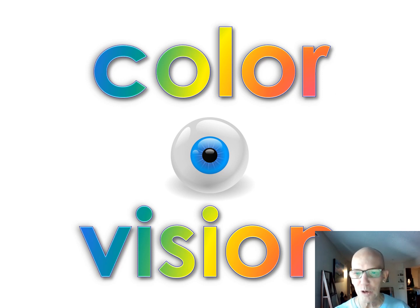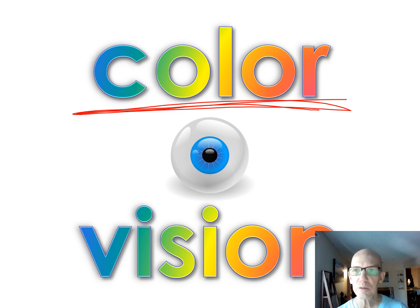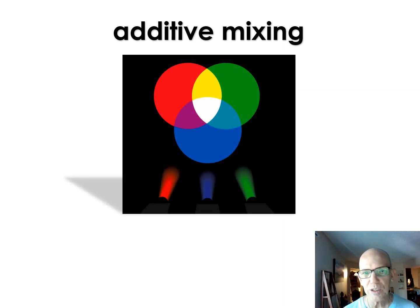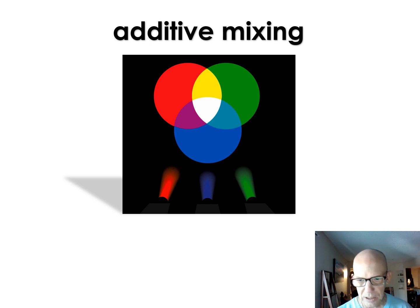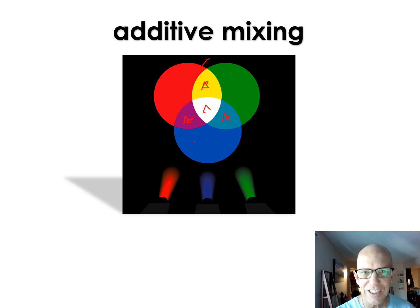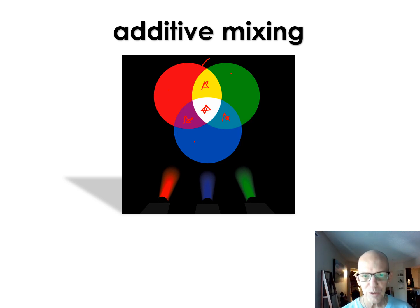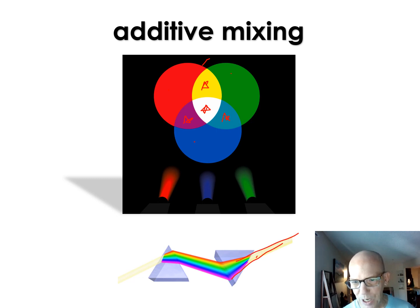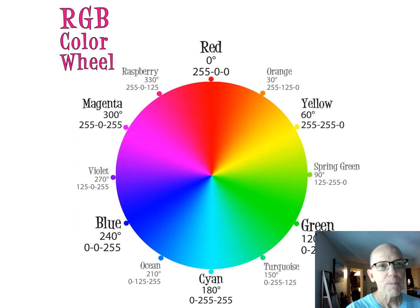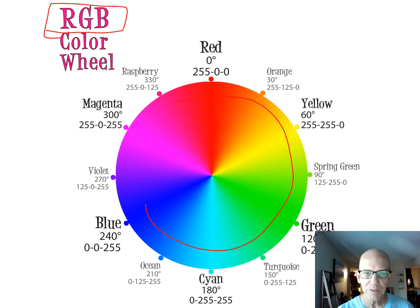The last section on vision — and the one most people want to know about — is color vision. How do we see in color? That's all about the cones, not the rods. Color vision from light is different from mixing paint. Mixing blue light and green light gives turquoise; blue plus red makes purple; green plus red makes yellow — which doesn't make intuitive sense from painting. If you shine all lights together you get white. Computer screens use RGB units. Using three colors of light, you can make all the colors of the rainbow.